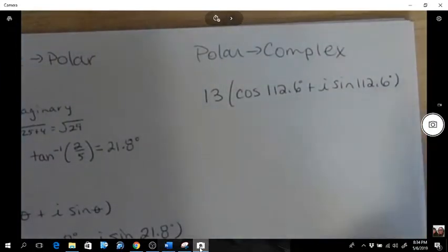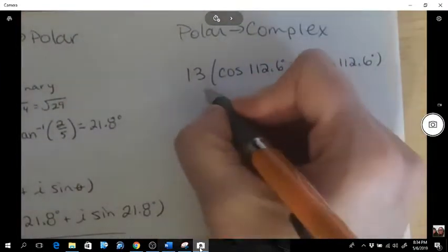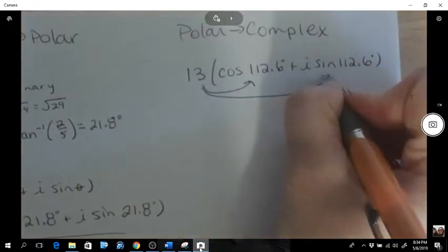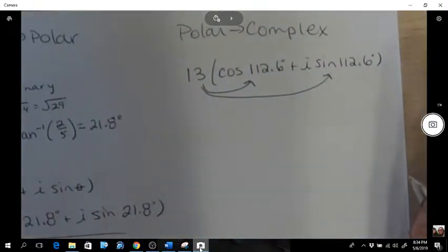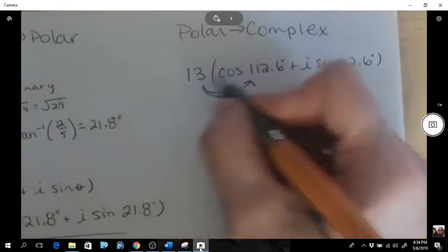So now we're in polar. How do you go to complex? Well, this is pretty straightforward in that you just expand it like that. Distribute. So in your calculator, check that I'm in the right mode.